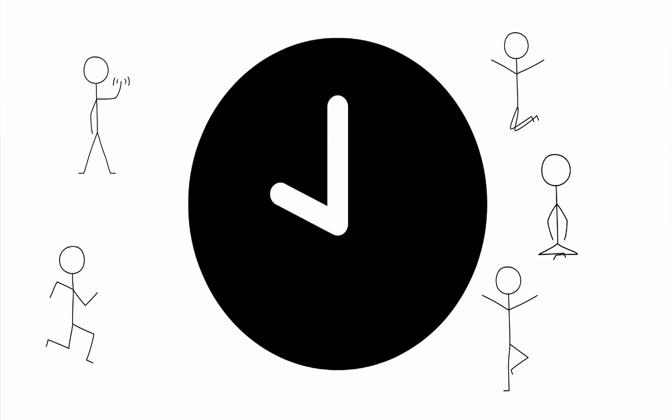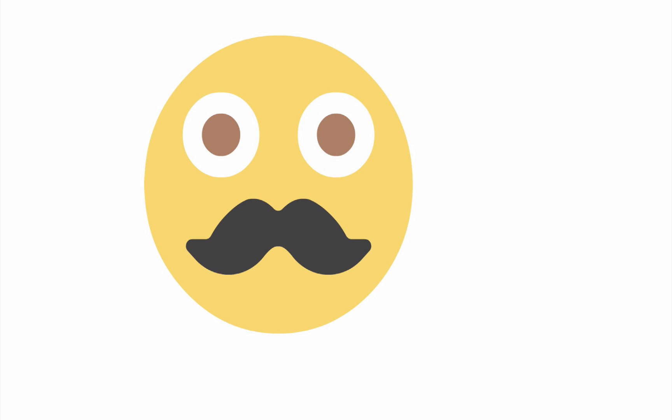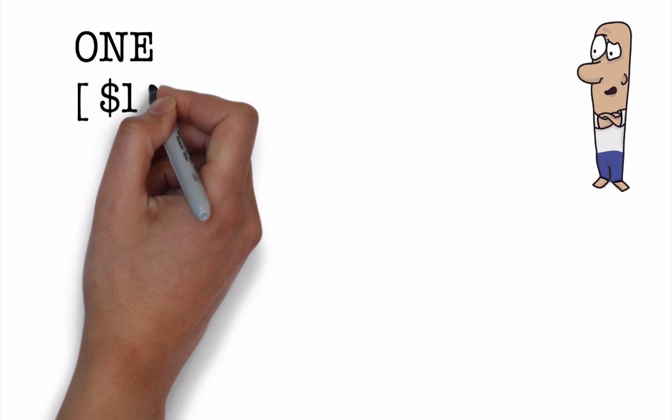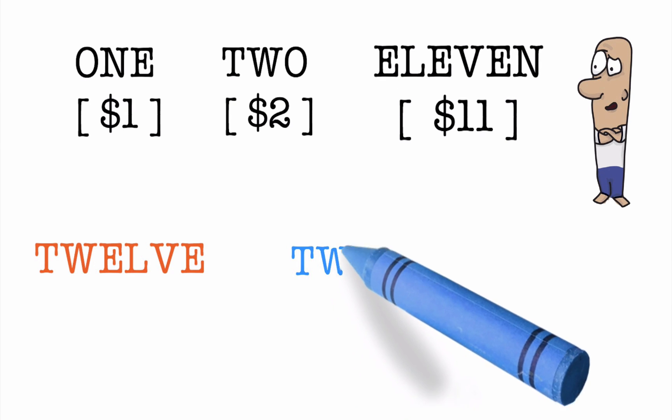Okay guys, welcome back. Now here is one way of solving this problem. I will use the popular strategy of trying to convert the unknown into what is known. And what is known are the costs of the words ONE, TWO, and ELEVEN. So can we convert the word TWELVE, which is unknown, into these letters which are known? Let's find out.